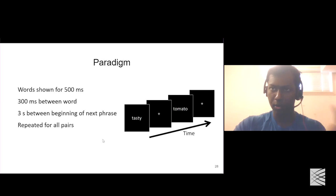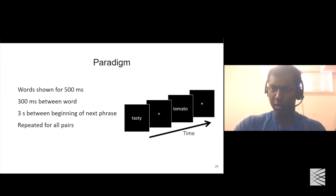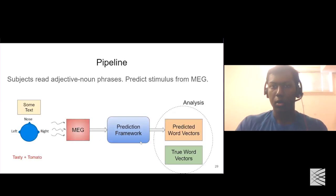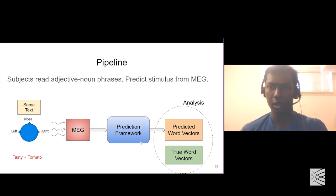Here's the paradigm: words were shown for 500 milliseconds, with a 300 millisecond interval between any two words, and a three-second gap between any two phrases. This was repeated for all pairs of words — there were 30 words in the study and many pairs created from those 30 words. An example: the adjective 'tasty' appears for 500ms, then a 300ms interval, then 'tomato' for 500ms, then a 300ms gap, followed by a three-second gap.